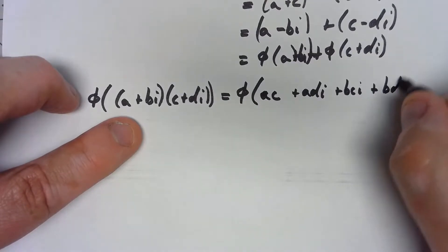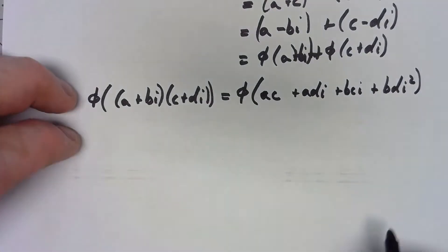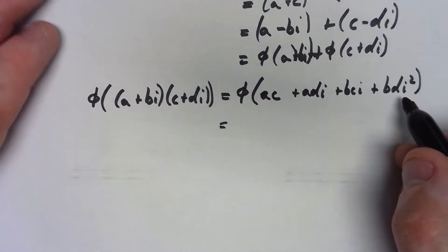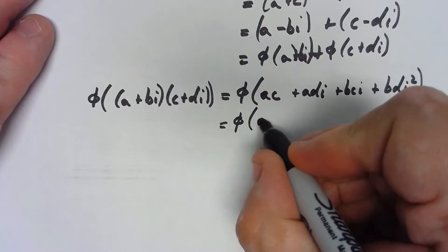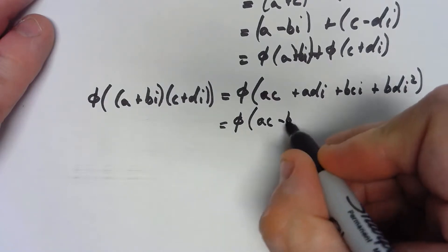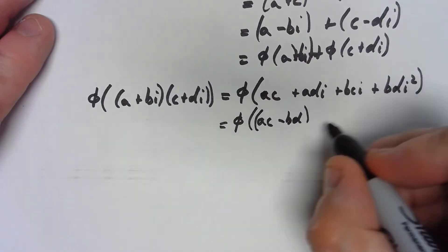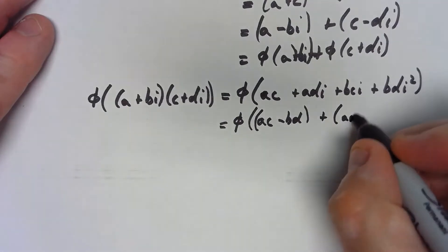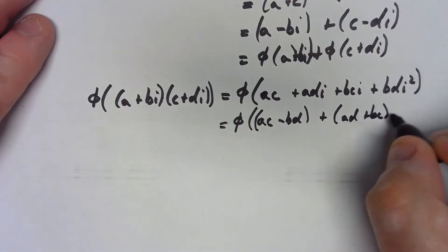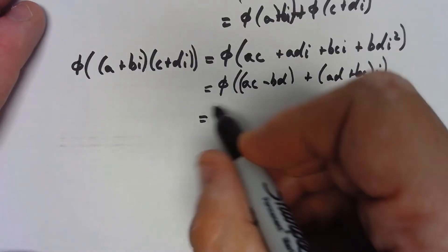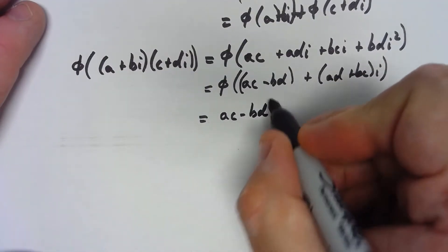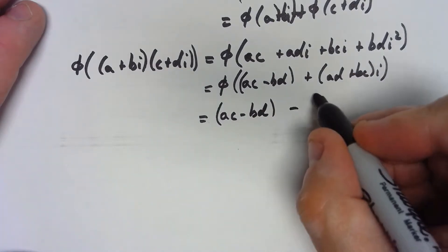But of course in the complex numbers, i² is negative 1. So this is φ(ac - bd + (ad + bc)i). Applying φ, that's going to be (ac - bd) - (ad + bc)i.